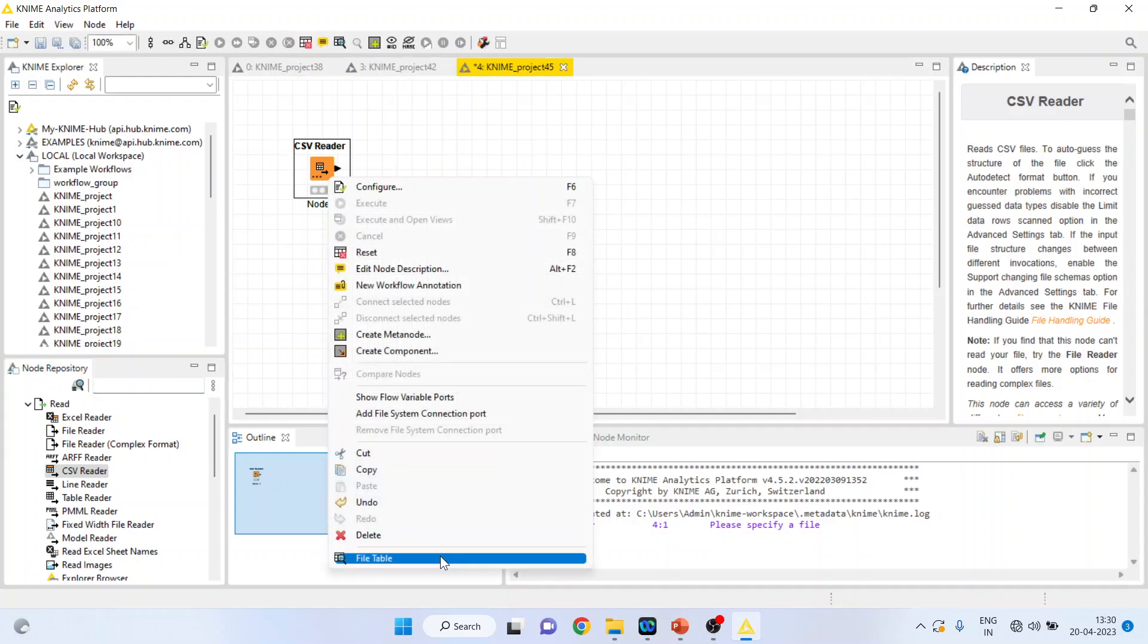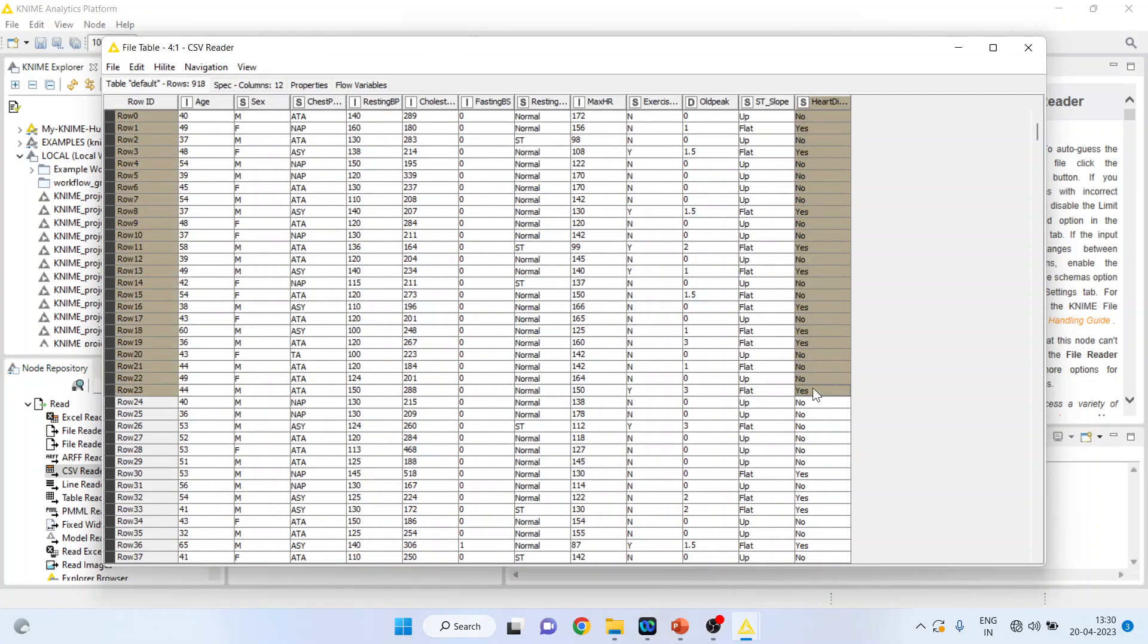Now again, right-click on it and see the file table. We want to do the classification of the heart disease on the basis of age, resting blood pressure, cholesterol, and maximum hours of exercise.